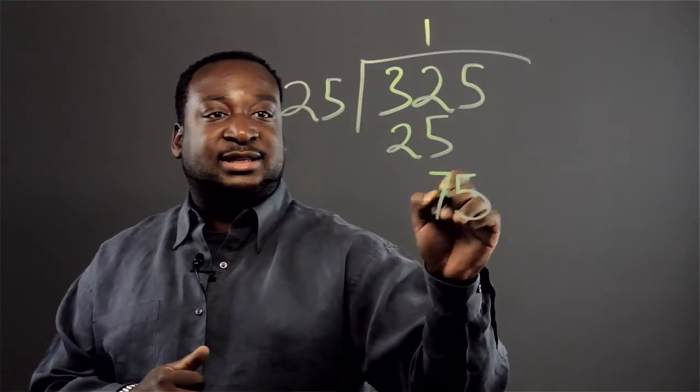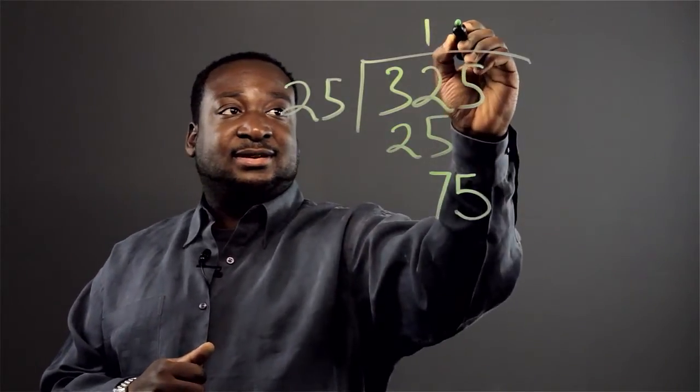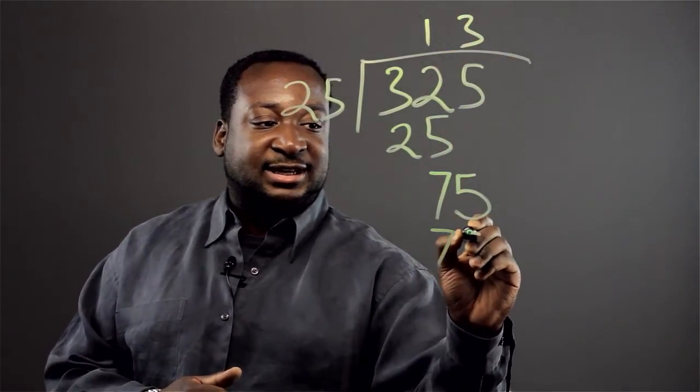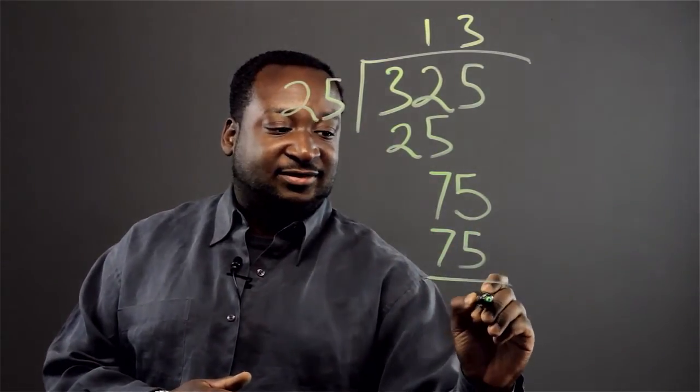Now how many times does 25 go into 75? Three times. Three times 25 is 75 and left with zero.